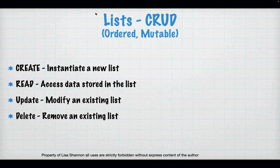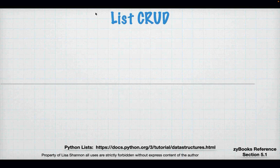We've heard about CRUD before — Create, Read, Update, Delete. For lists, Create means you're creating a new list out of thin air. Read means you're getting data stored in the list, most likely by its index value or in a for loop. Update means you're going to modify an existing list. Delete means you're going to remove something from a list. So we still have that same concept: we can create, read, update, and delete.